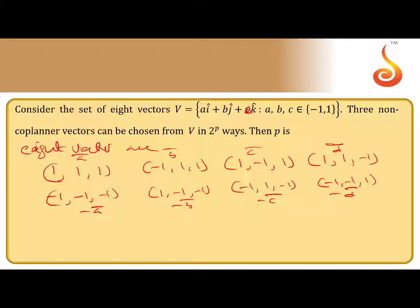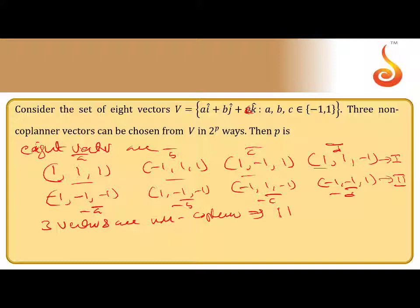Observe the first set of four vectors — if you take any three, they are non-coplanar. Non-coplanar means the scalar triple product is not equal to zero. So there are two groups: Group 1 and Group 2. Any three vectors taken directly from Group 1 or directly from Group 2 are non-coplanar, because the triple product is not equal to zero. You can check this as Case 1.